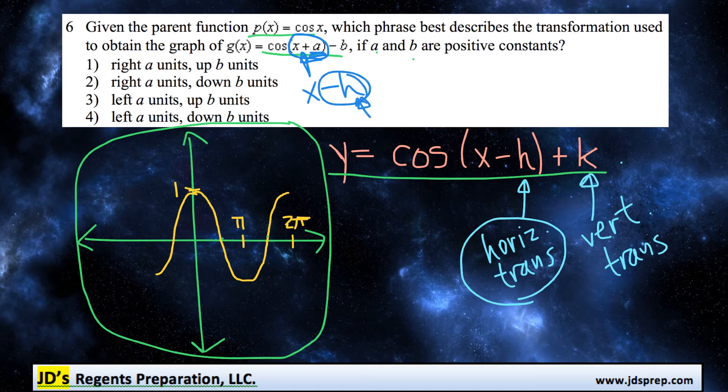this h value, or in this example a, has to be negative. Negative means it's moving to the left. So I hope that makes sense. So it is going to be moving left a number of units, so our correct answer is going to be option 3 or 4.